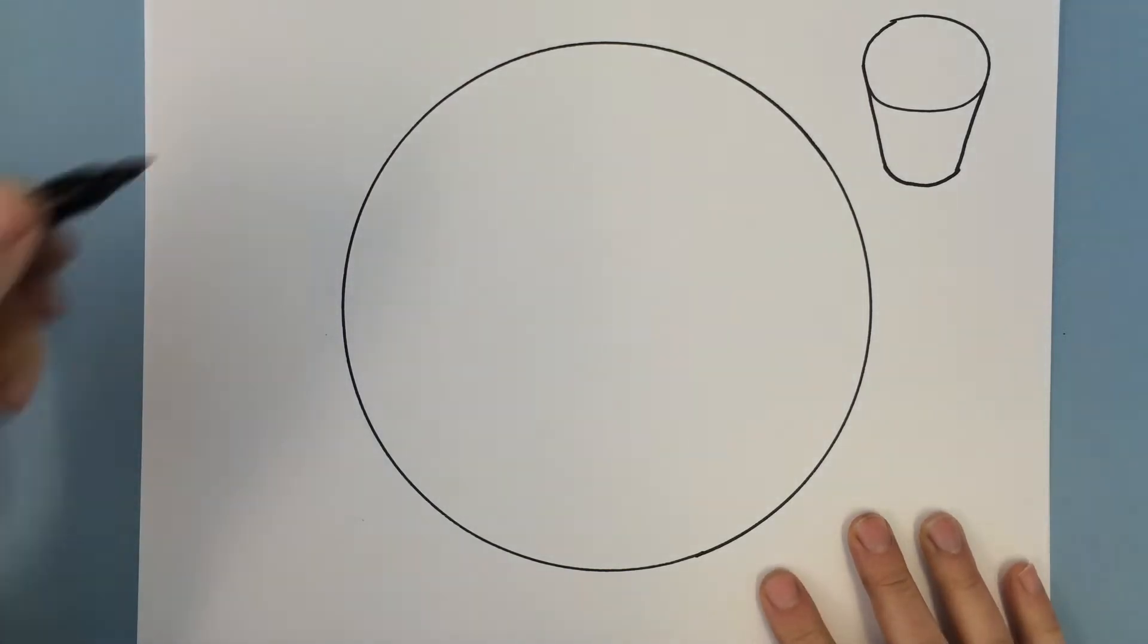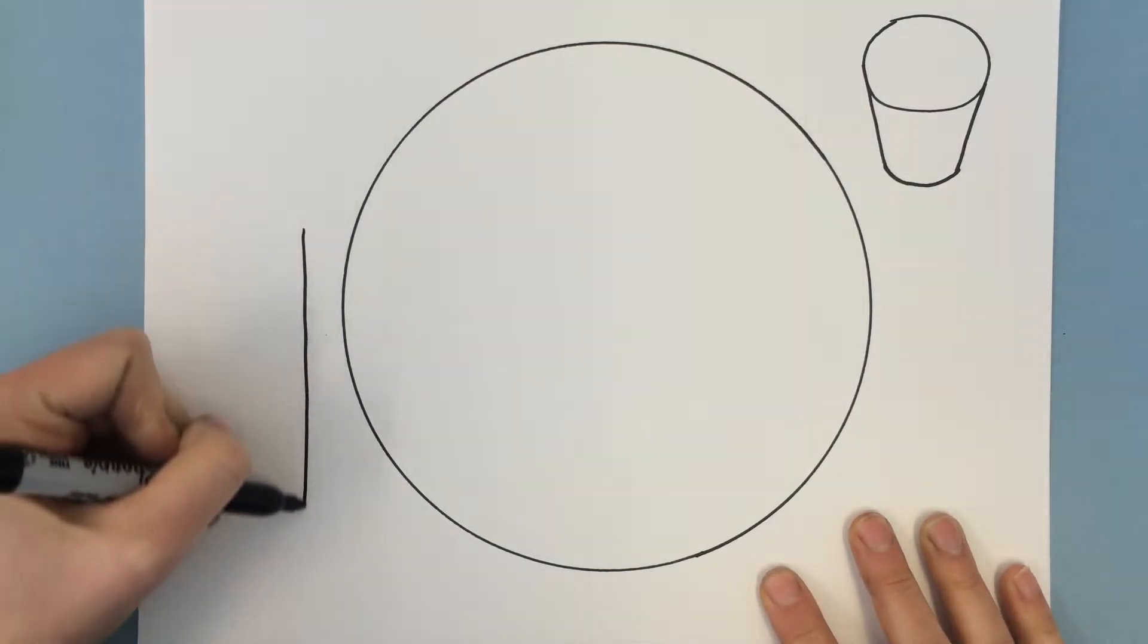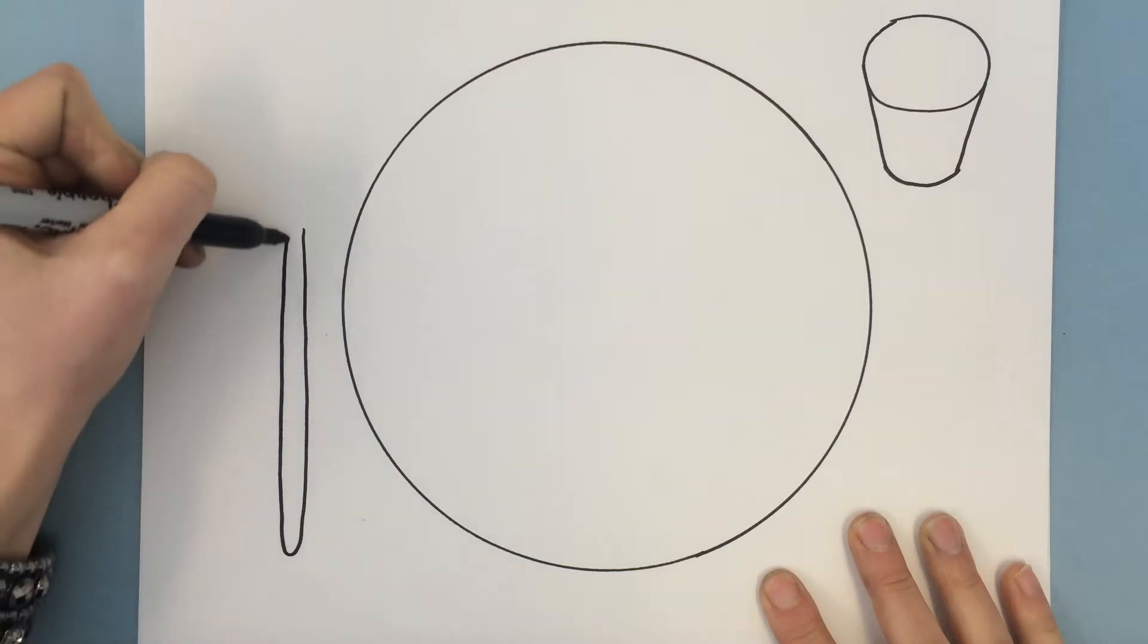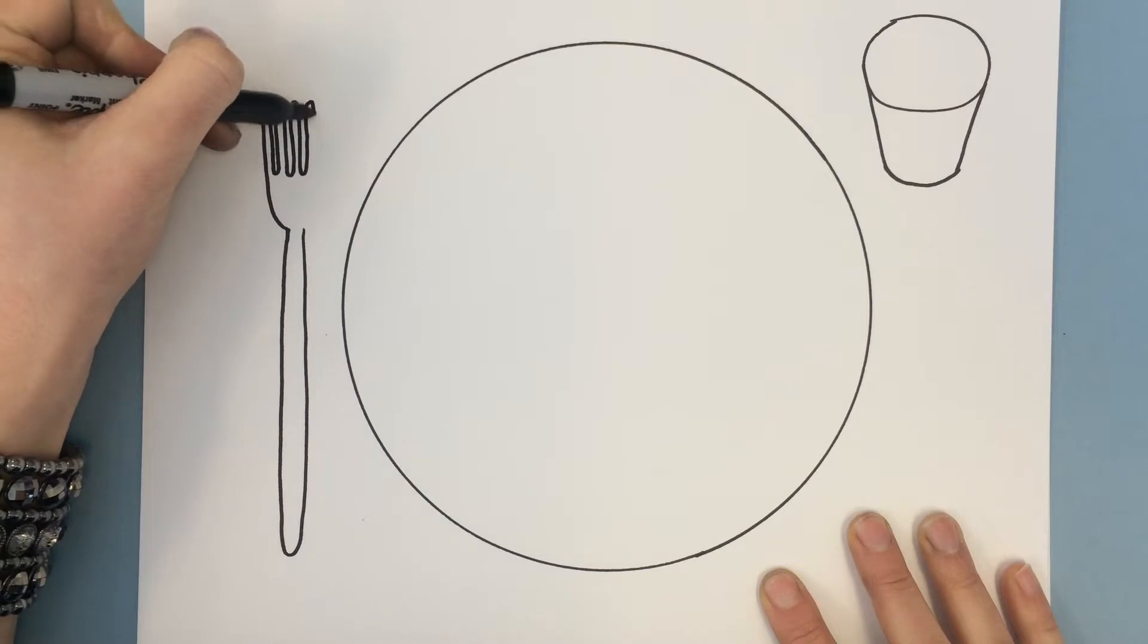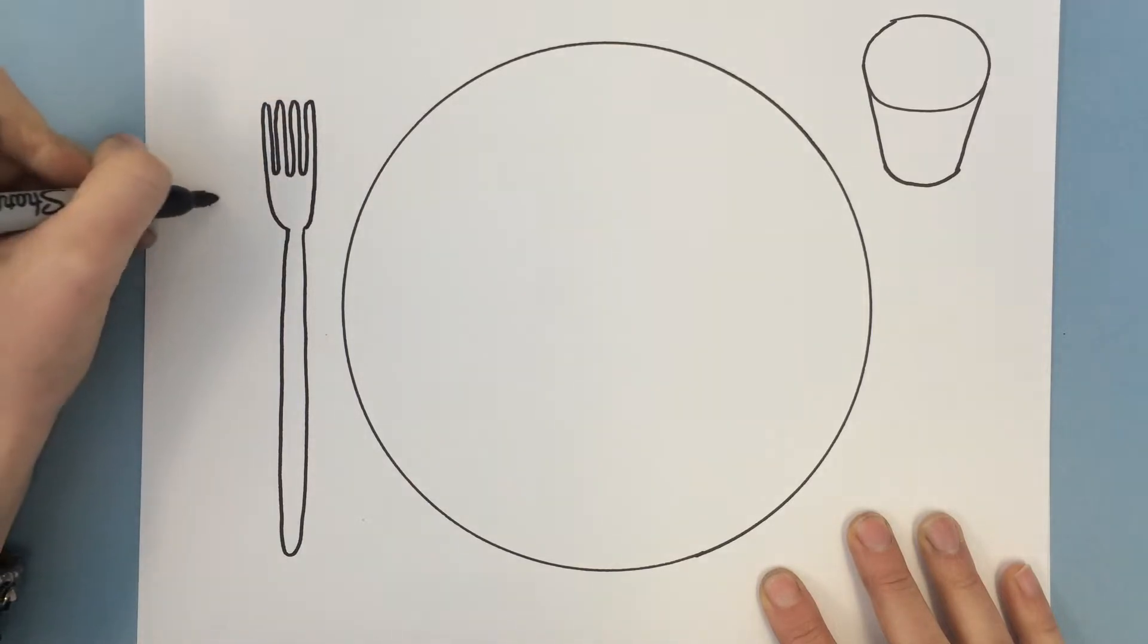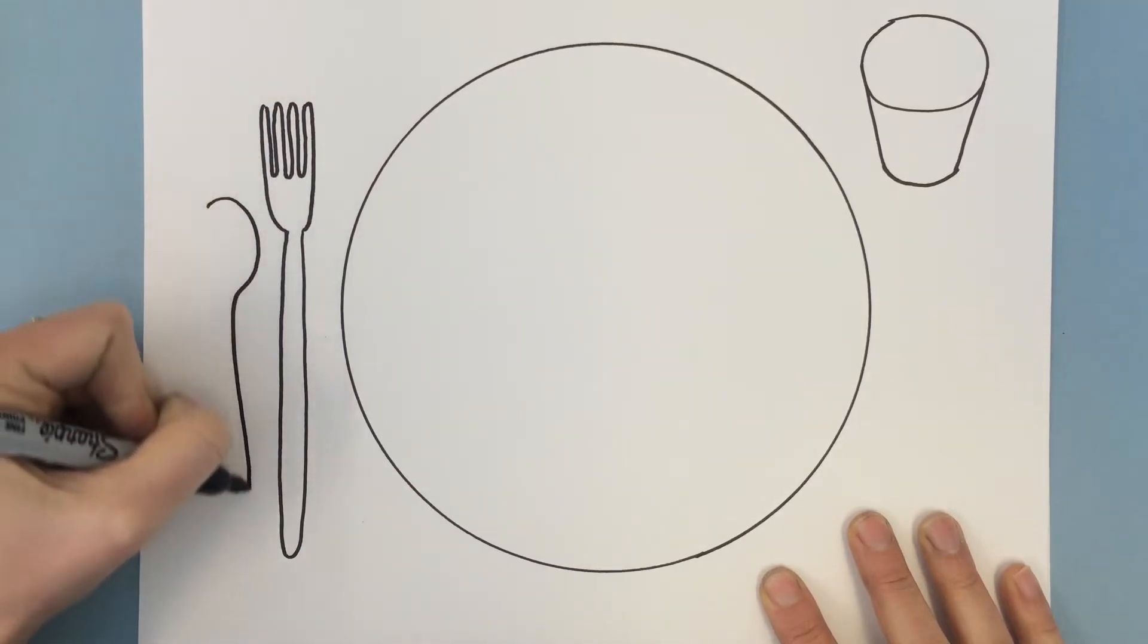And then I'm gonna draw my utensils. I'm gonna draw a fork over here. Lots of times you need a fork. Sometimes you might need a knife. Sometimes you might need a spoon. A spoon is a little bit shorter than a fork normally.